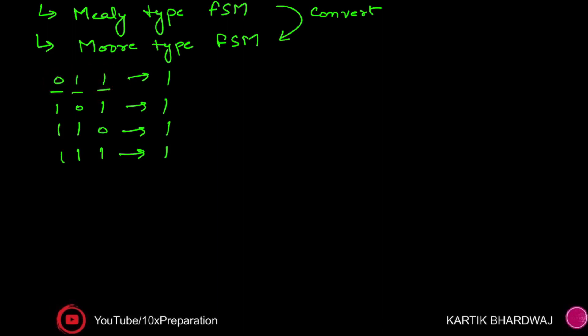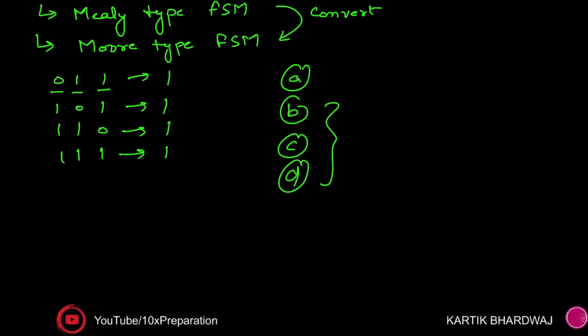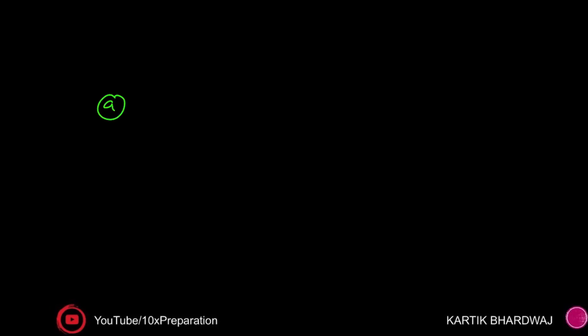Three states are required, but one initial state is also required where everything will start. The initial state — let's call it state A. I am going to name them A, B, C, D. These three states are to check the samples — these are the reset states, the starting states, from where we will begin checking.